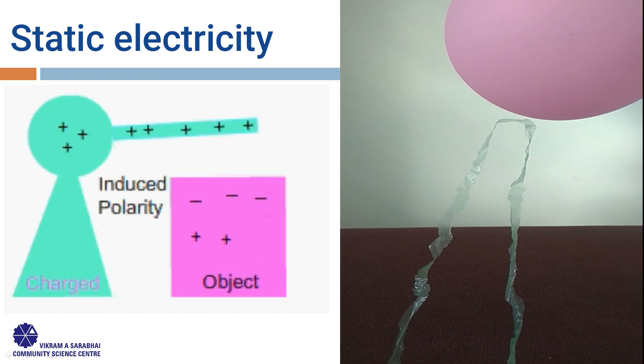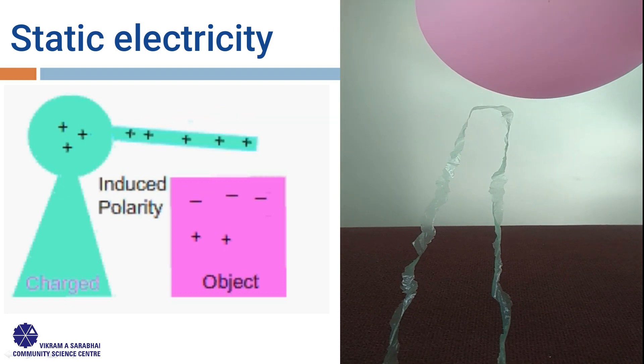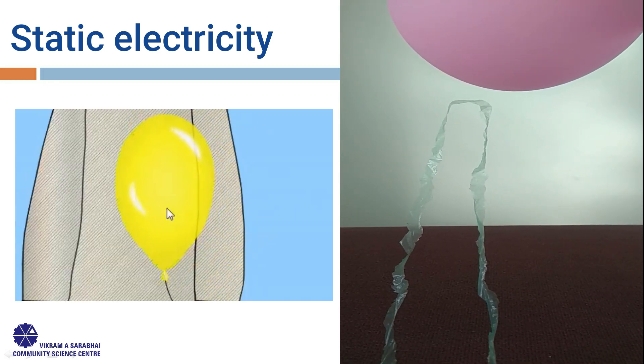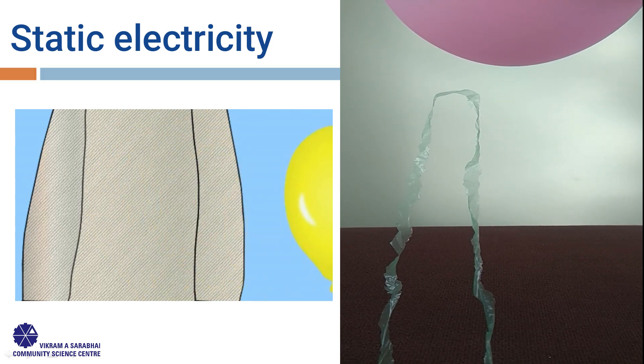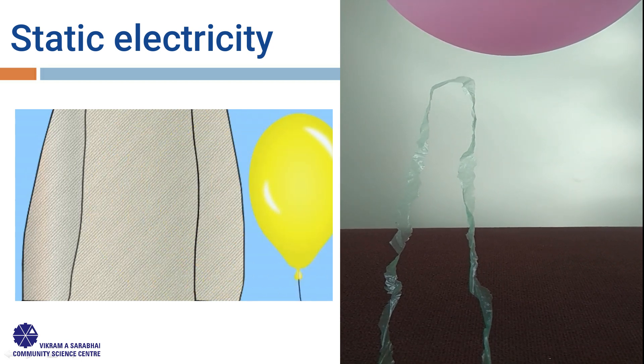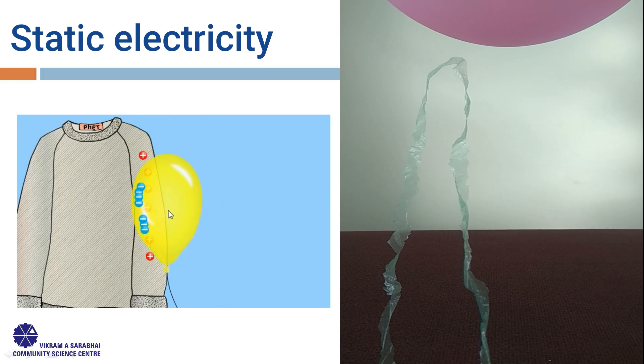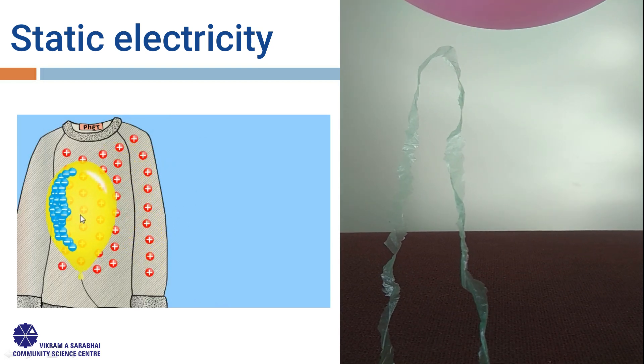In this case, rubbing the balloon against the woolen or polyester cloth, basically you are transferring or adding a surplus of electrons—that is, negative charges—to the surface of the balloon.